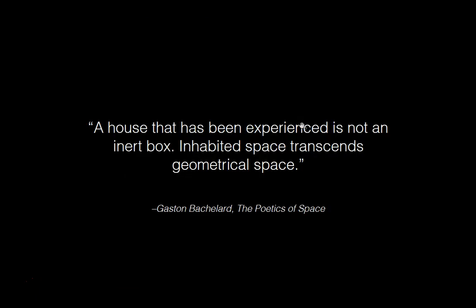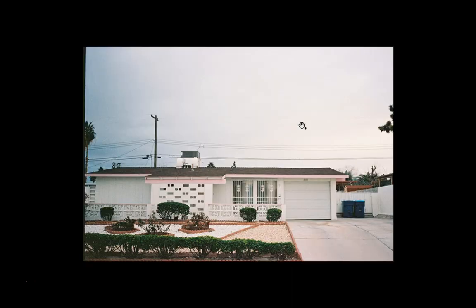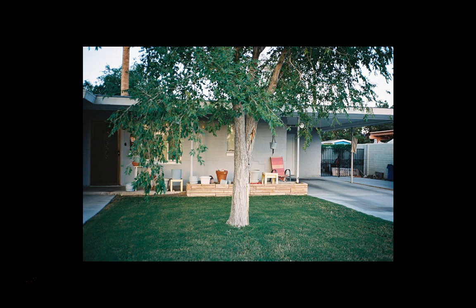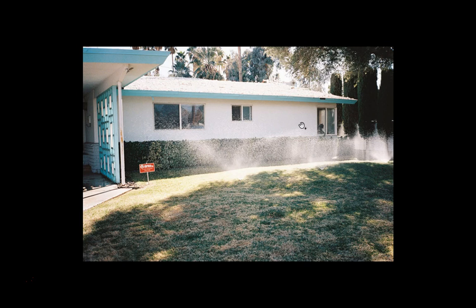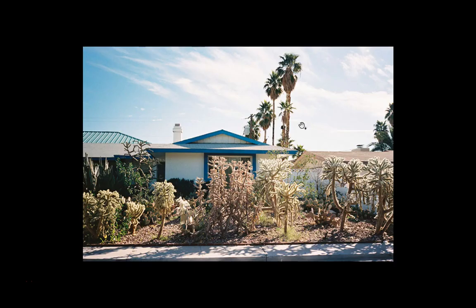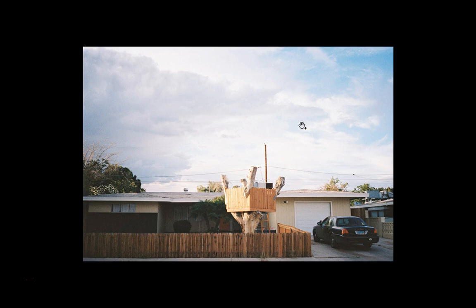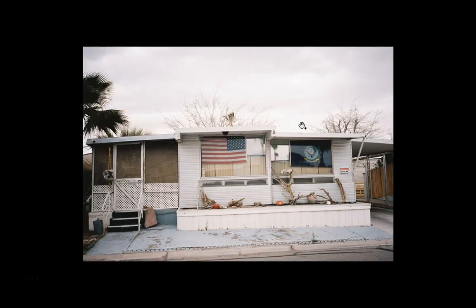'A house that's been experienced is not an inert box. Inhabited spaces transcend geometrical space.' Victoria Hogan photographs homes. She's from the East Coast and moved to the Vegas area for grad school, very interested in the types of homes so different from what she grew up in — these desert landscapes and how people lived. The front yard is this communal space, this welcoming to the home that is transcribed from place to place. She uses her photography as an act of discovery, finding something odd about her new surroundings and using her camera to explore her place and feel connection to it.